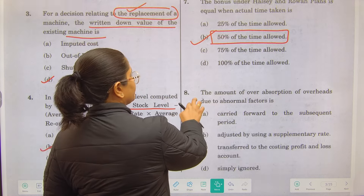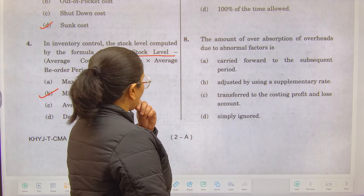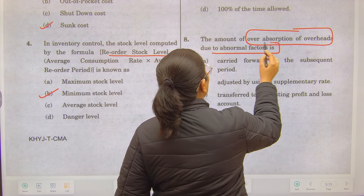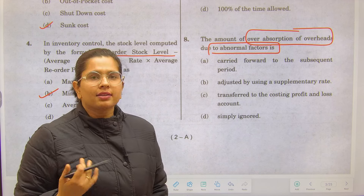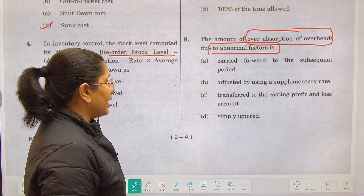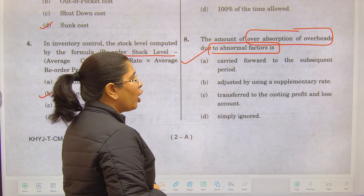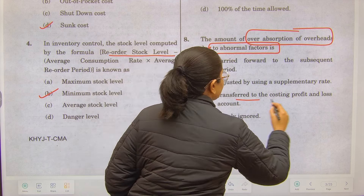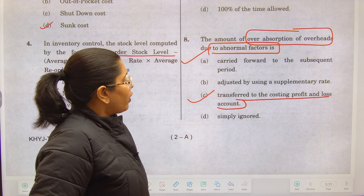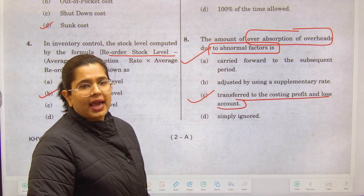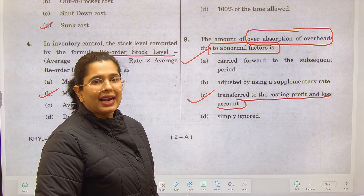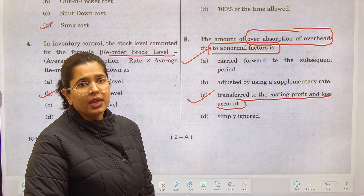Regarding over-absorption of overheads: if overheads are over-absorbed due to abnormal factors, they cannot simply be added to product cost or ignored. Due to abnormal factors, the over-absorbed amount must be transferred to the costing profit and loss account, because we have to account for it somewhere. It is not appropriate to adjust it using a supplementary rate since it is caused by abnormal factors.